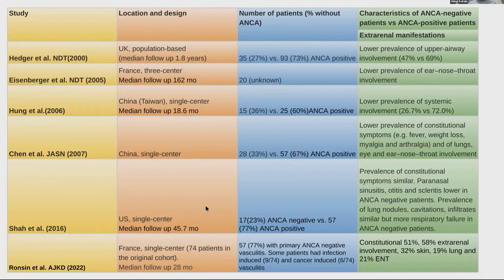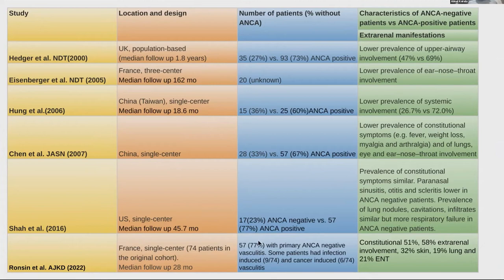The 2016 US paper showed 23% ANCA negative versus 77% ANCA positive. Constitutional symptoms were similar, but paranasal and ENT involvement was less common in ANCA-negative patients. The largest study, published in 2022 from France, had 57% with primary ANCA-negative vasculitis. These ANCA-negative patients had less constitutional involvement, less extra-renal involvement, less skin and lung involvement, and almost 100% had renal involvement.